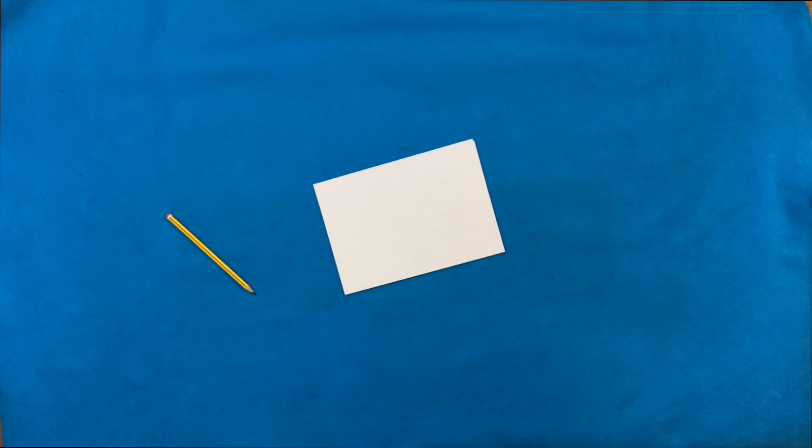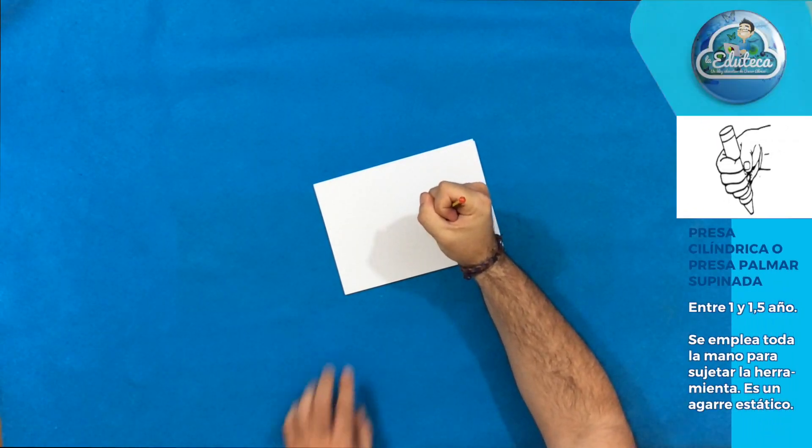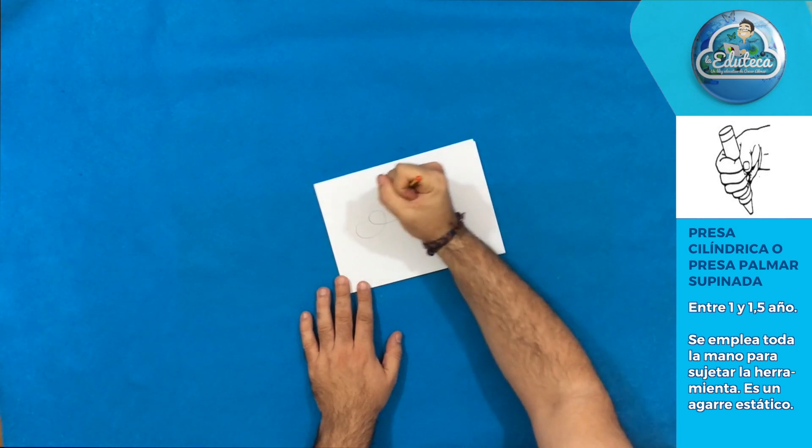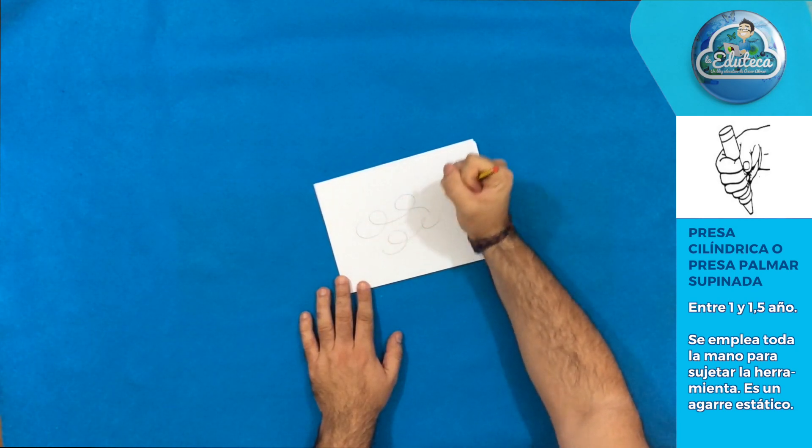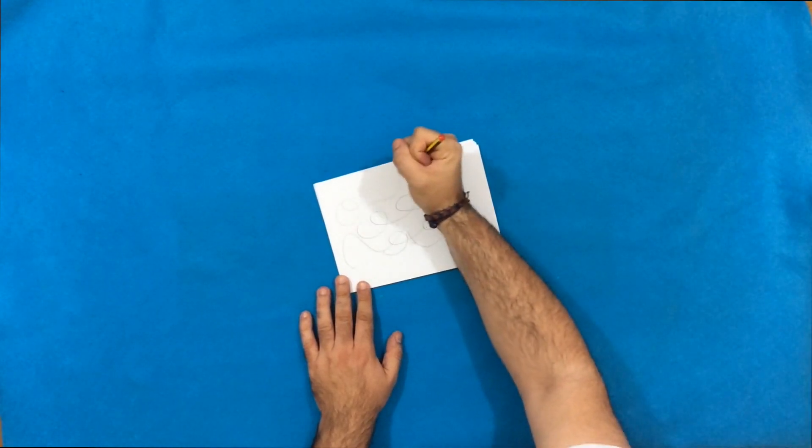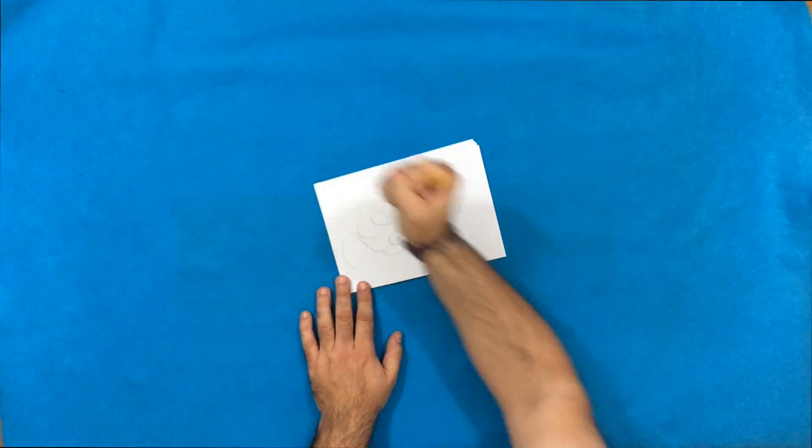Vamos a comenzar con la primera de las fases que es la presa cilíndrica o presa palmar supinada. Aparece entre el año y el año y medio y se emplea toda la mano como estáis viendo para sujetar la herramienta, el lápiz, el rotulador. El movimiento va a venir del hombro y también del brazo que sirven para mover la mano. Se trata de un agarre como veis muy estático.